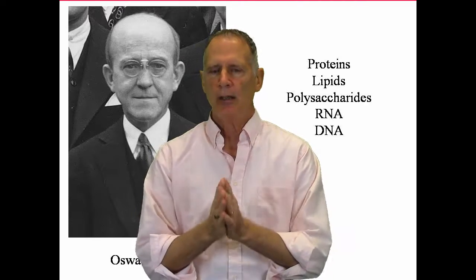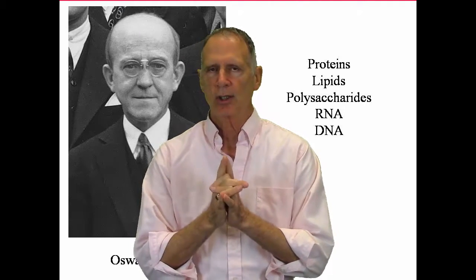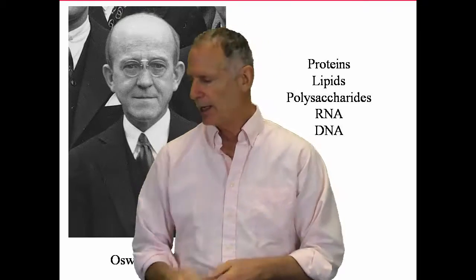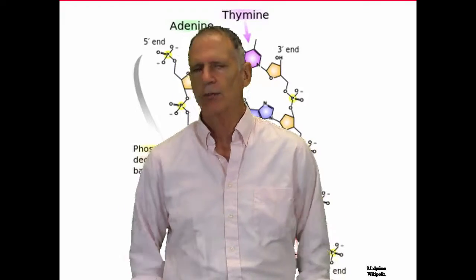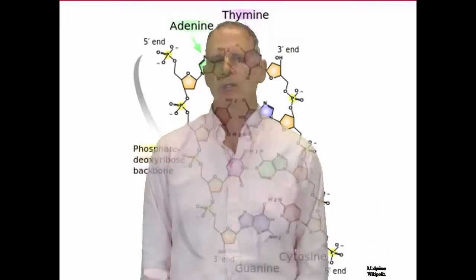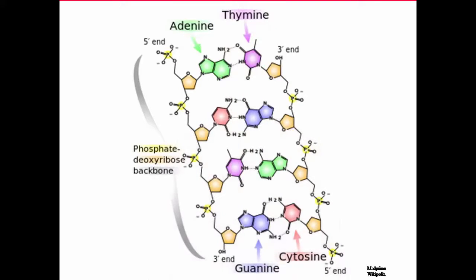So really, Oswald Avery starts people looking for the coding system in DNA. And the first thing everybody does is run out and analyze what DNA is to figure out what might be the coding. And here is DNA, the composition of it. It's a phosphate deoxyribose backbone. You've probably all heard this in biology in high school, somewhere along the line.